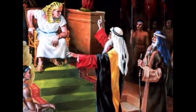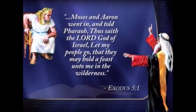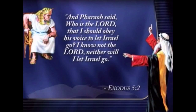Moses obeyed. He returned to Egypt and made the request to Pharaoh. Moses and Aaron went in and told Pharaoh, Thus saith the Lord God of Israel, Let my people go, that they may hold a feast unto me in the wilderness. And Pharaoh said, Who is the Lord, that I should obey his voice, to let Israel go? I know not the Lord, neither will I let Israel go.